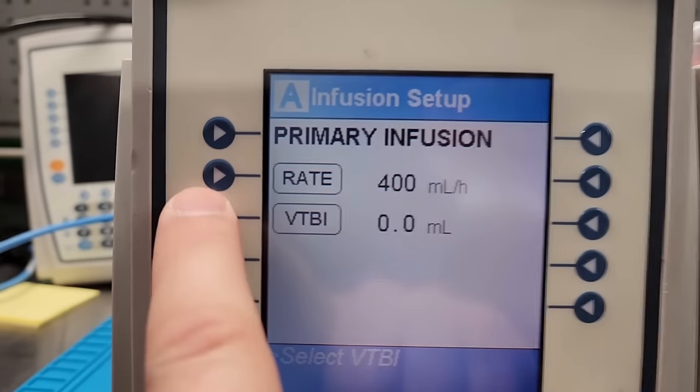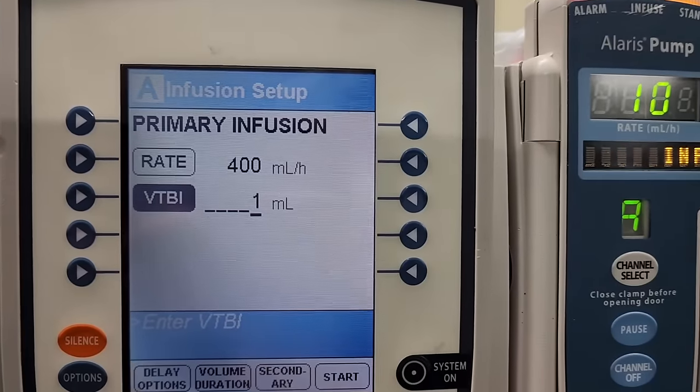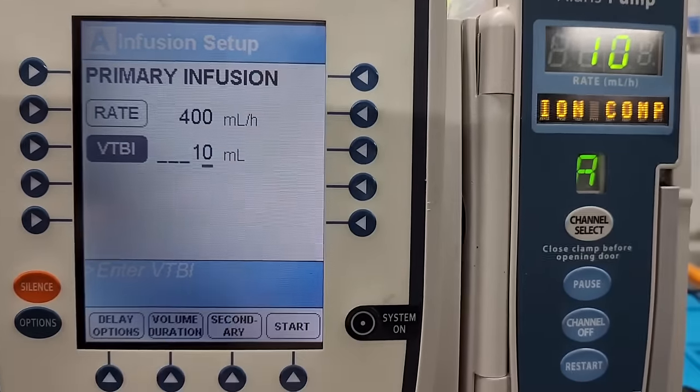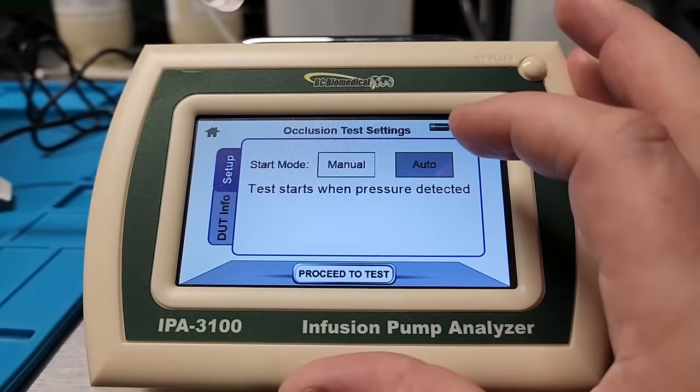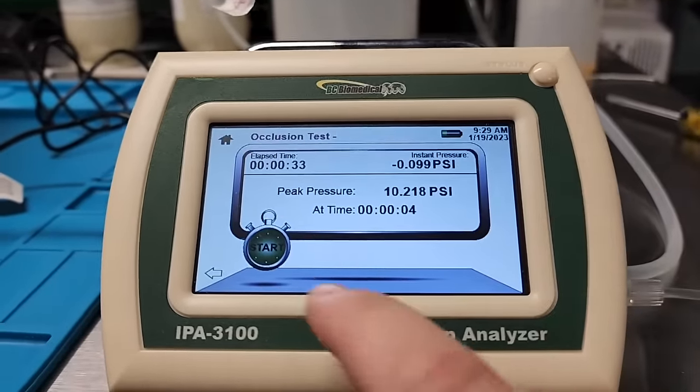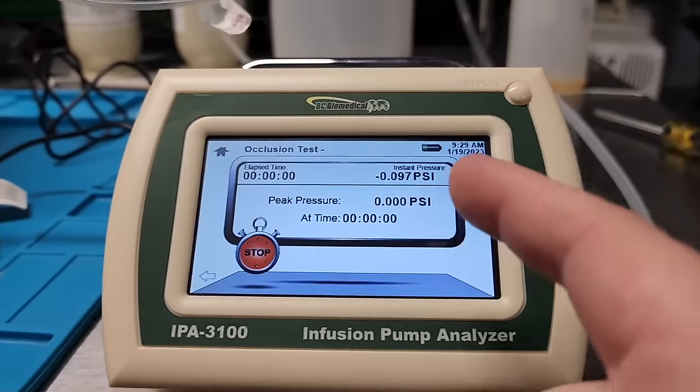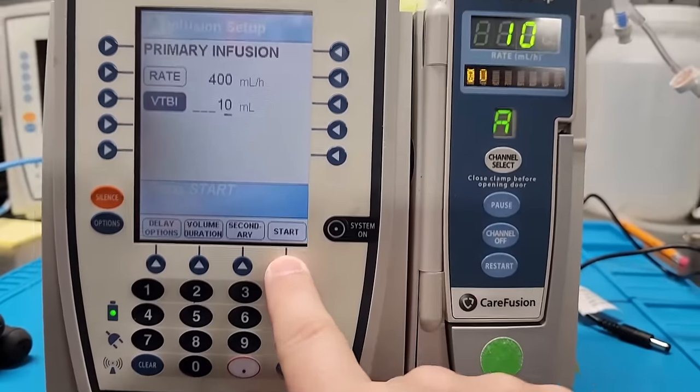And I'm going to do an occlusion test. So let's go ahead and set this guy for, let's say 10 milliliters. And let's come back here. Occlusion test. Proceed to test. It says it's going to be automatic. So it reset everything. And let's do a start.